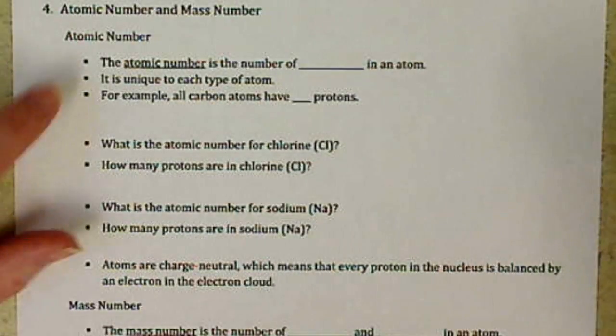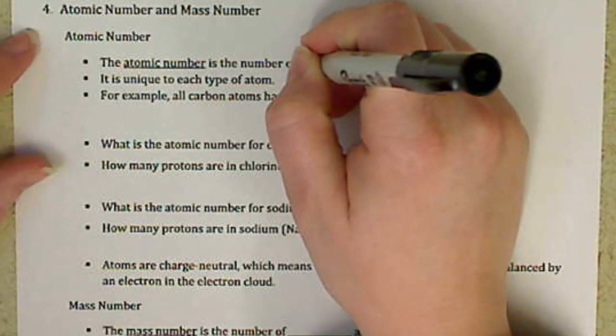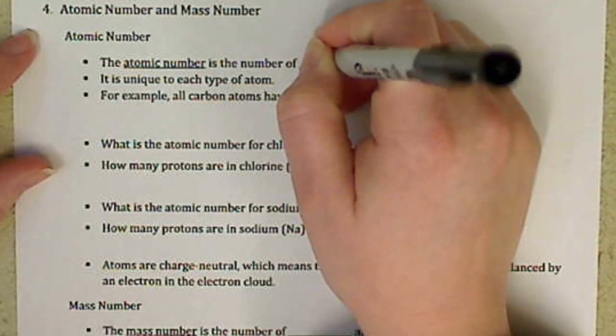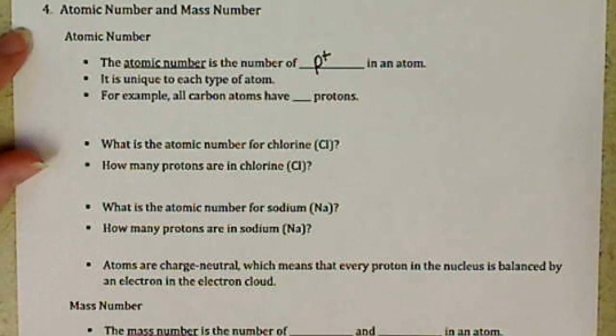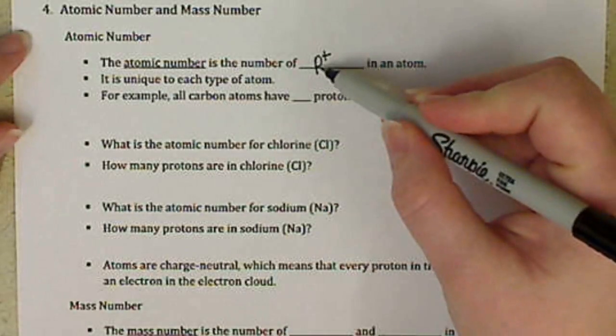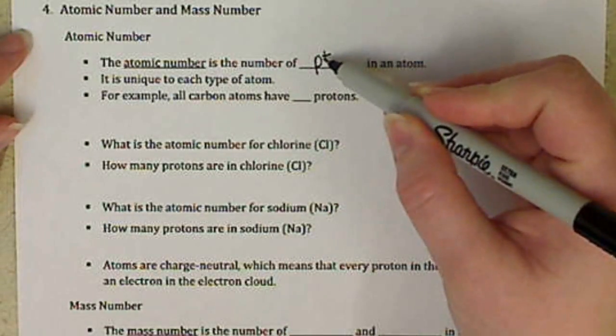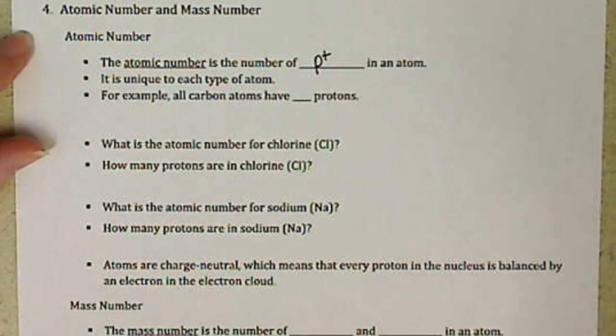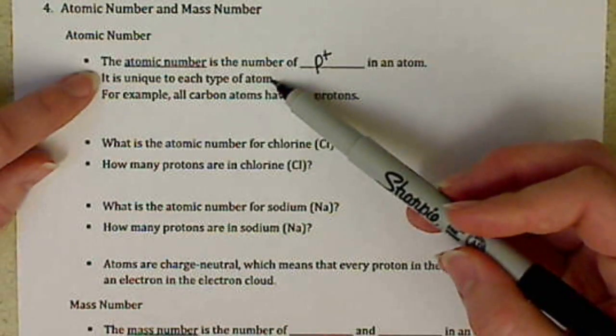So the atomic number is the number of protons in an atom. Just remember we shorthand protons as P with a superscript plus, and it's unique to each type of atom.